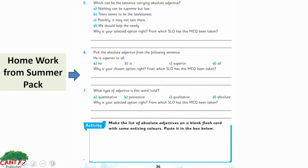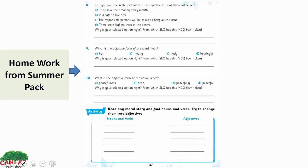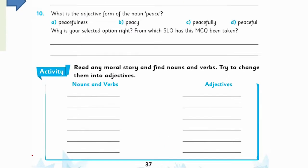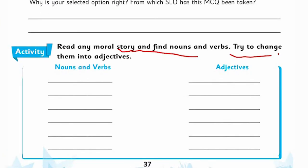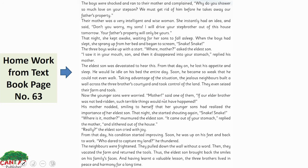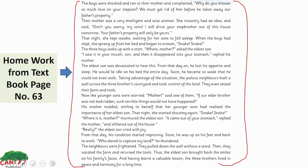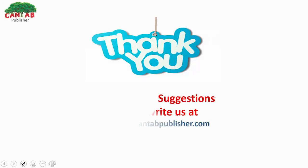This is your homework from the Summer Pack, page number 36. You also have an activity: read any moral story, find nouns and verbs, and try to change them into adjectives. And this is your homework from the textbook, page number 63 — from Unit 5. Read the text and underline all the types of adjectives we have discussed. This is your home task. I hope you have enjoyed my lesson. Thank you.